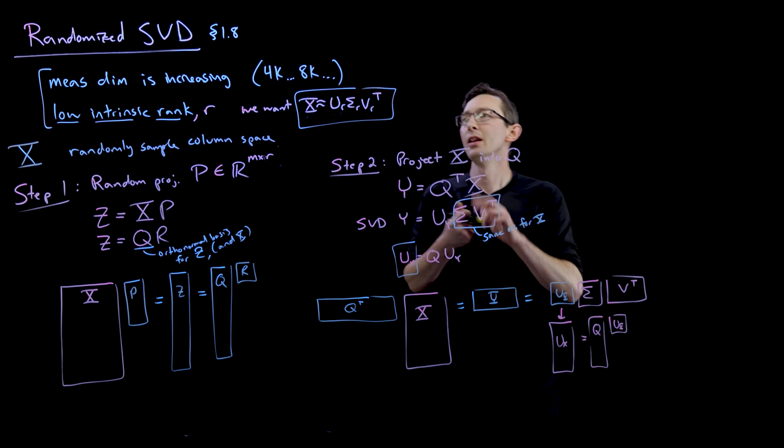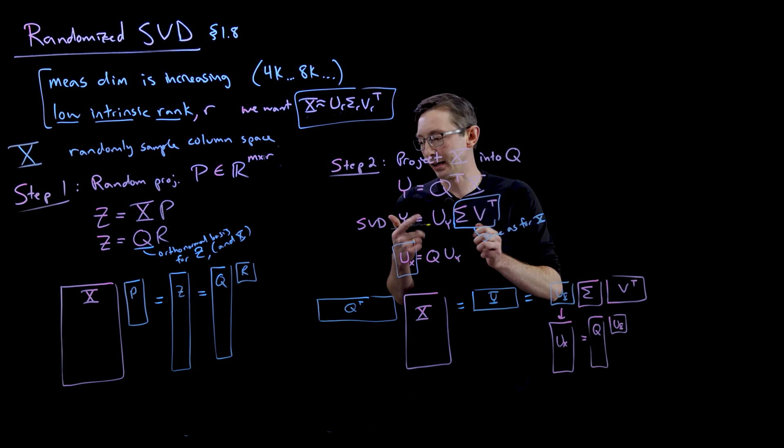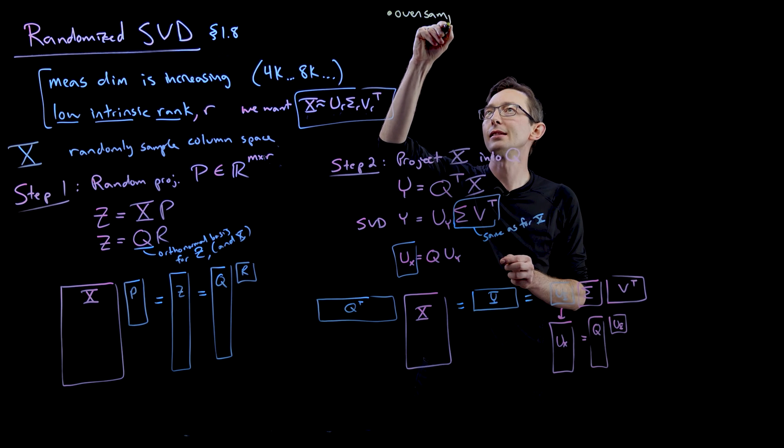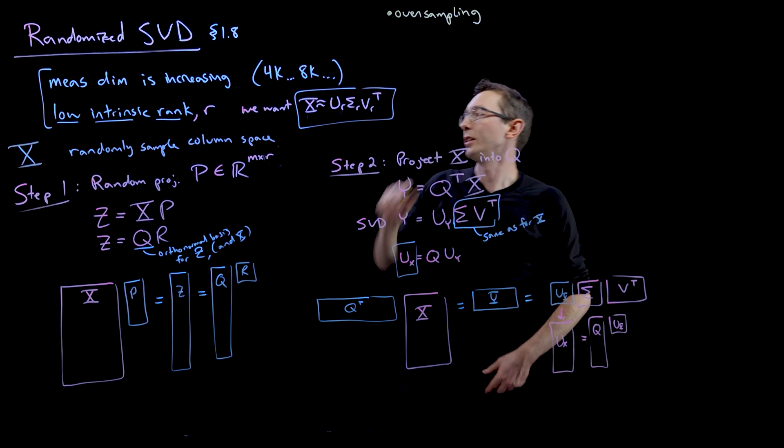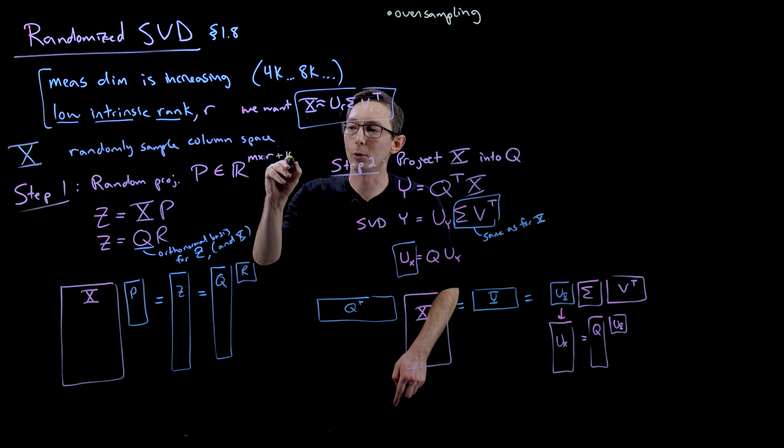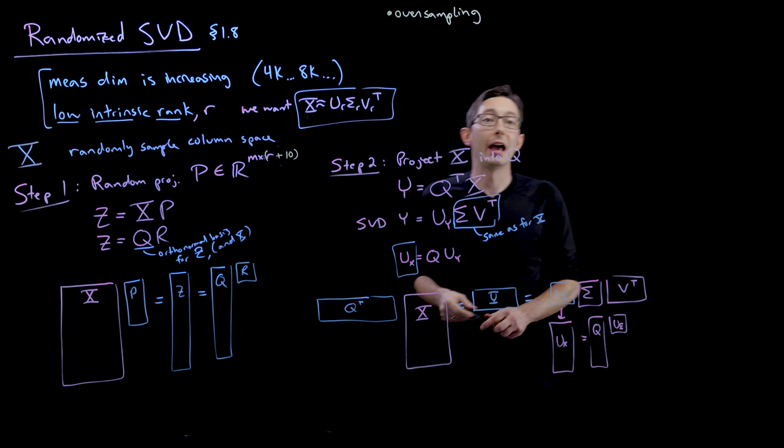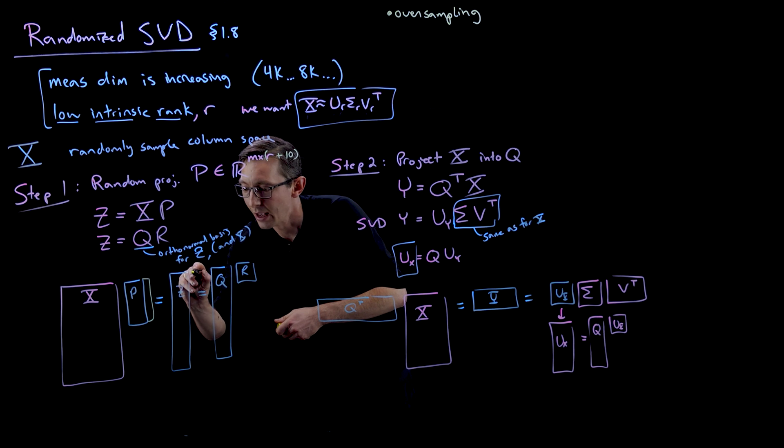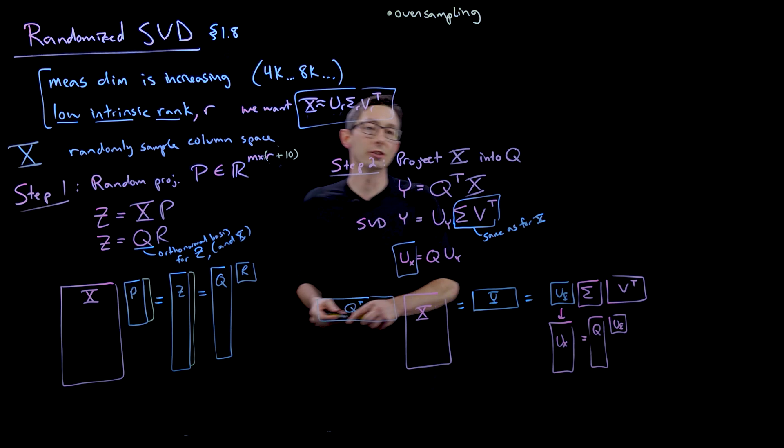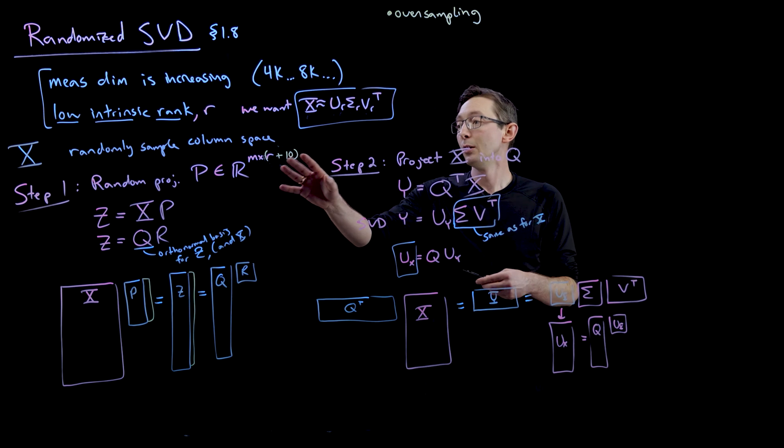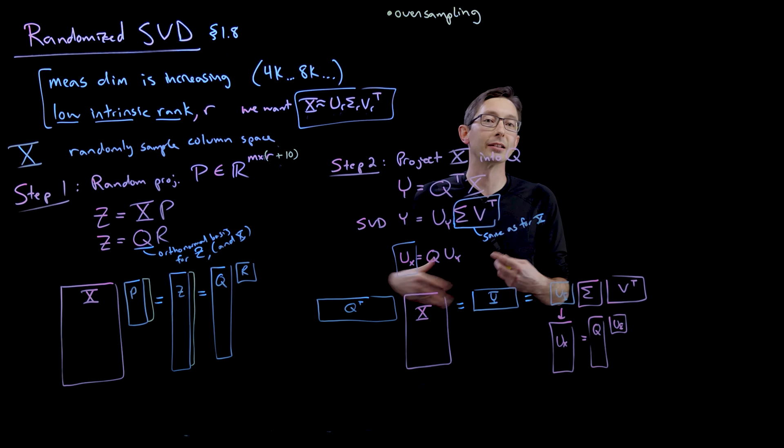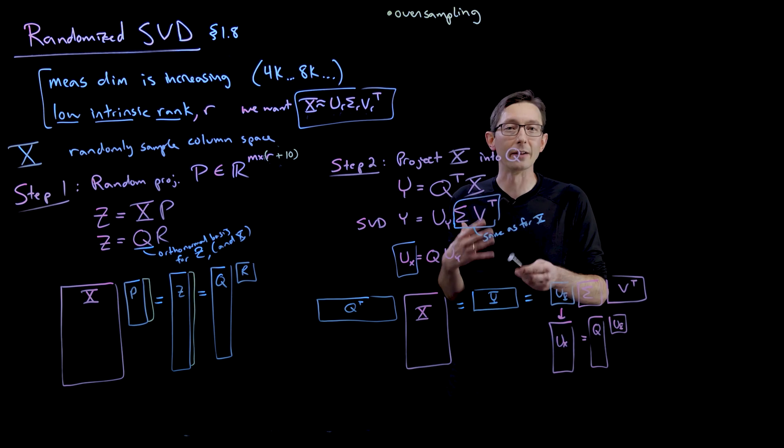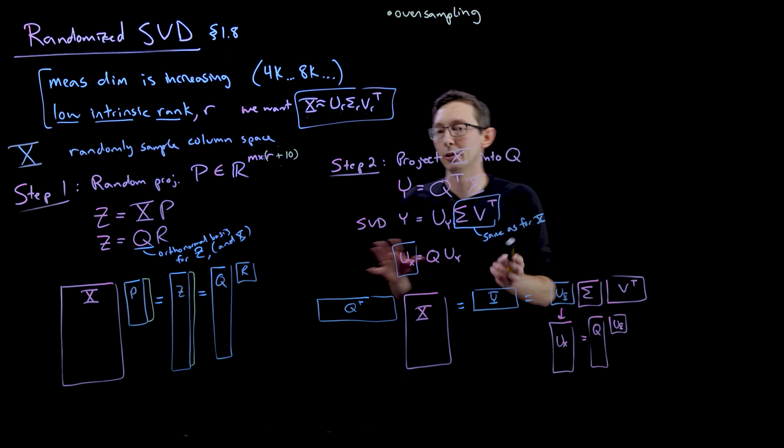There are two techniques that can help. One is called over-sampling. That's essentially a technique where you add maybe five or ten extra columns to this random projection matrix, so you make it just a tiny bit bigger and you have a much better chance of capturing the dominant subspace of X when you do this, even for a relatively small additional cost. So it's always recommended to over-sample by five or ten columns if possible.